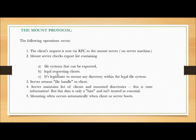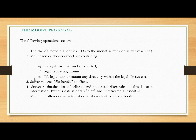There are five operations performed in the mount protocol. First, the client request is sent via RPC to the mount server. The mount server checks an export listing containing file systems that can be exported. It verifies legal requesting clients. It is legitimate to mount any directory within the legal file system. The server returns a file handle to the client and maintains a list of clients and mounted directories. Mounting often occurs automatically when the client or server boots.